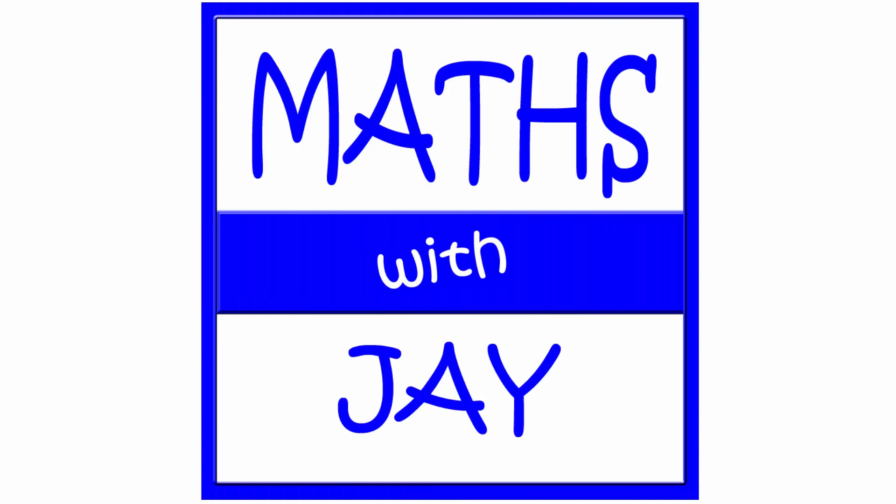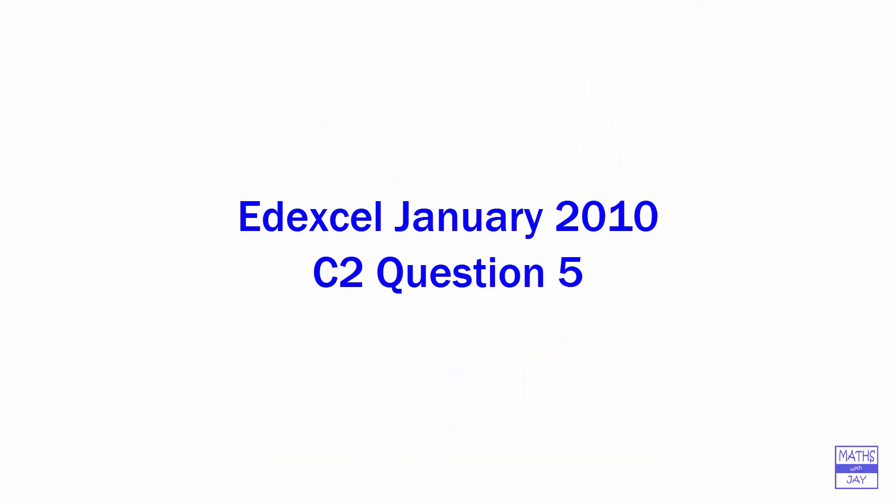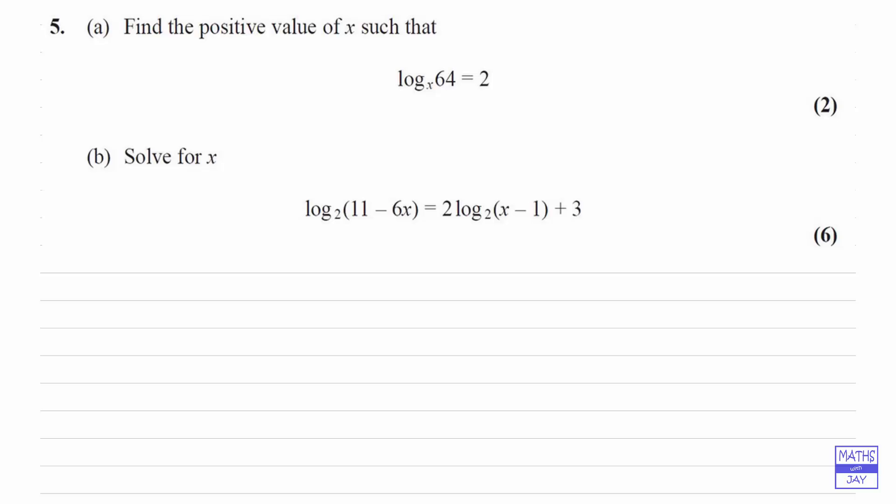Hello and welcome to Maths with Jay. In part a, we know that our logarithm is 2, so that means our index is 2 and our base is x. So we know that x squared is equal to 64. Now usually, if we had x squared equal to 64, we would get two answers, a positive and a negative one. But note that the question says find the positive value of x, so we simply know that x is equal to 8.